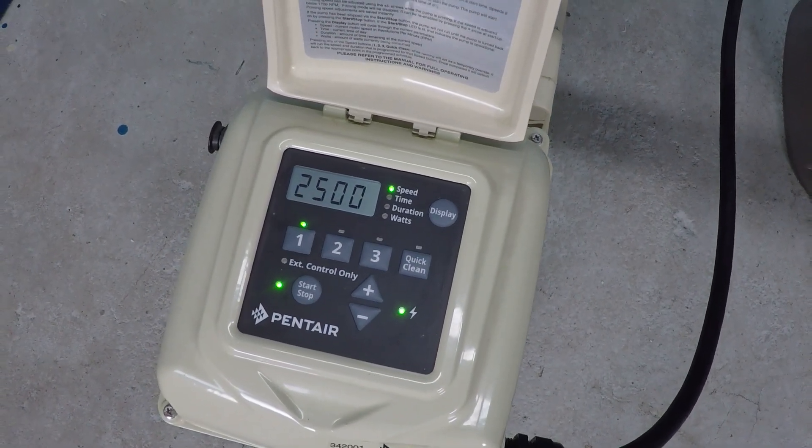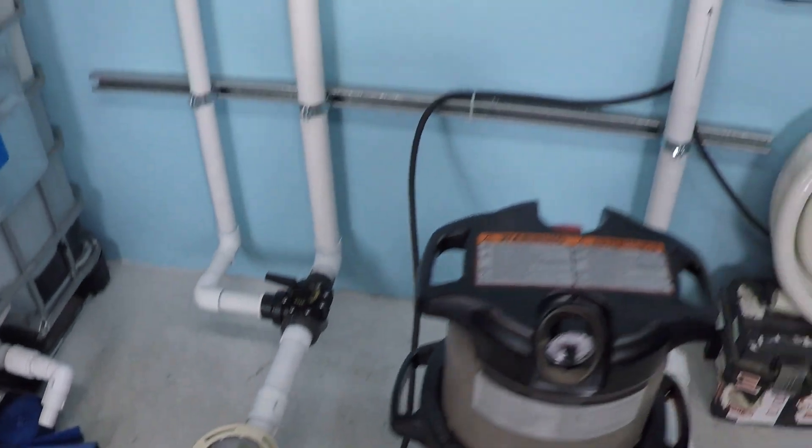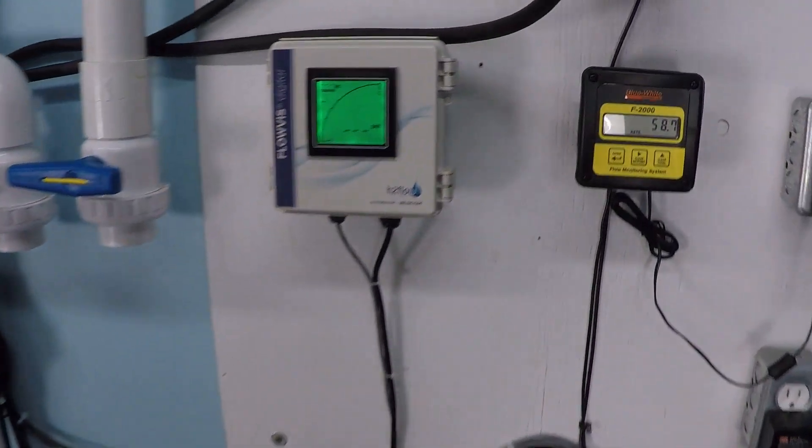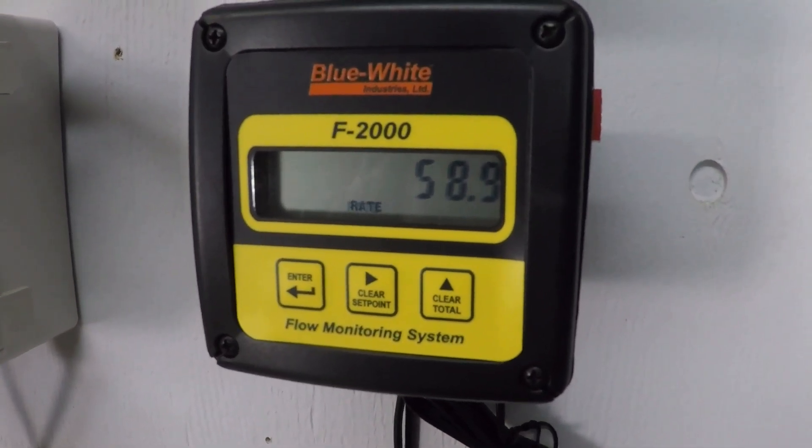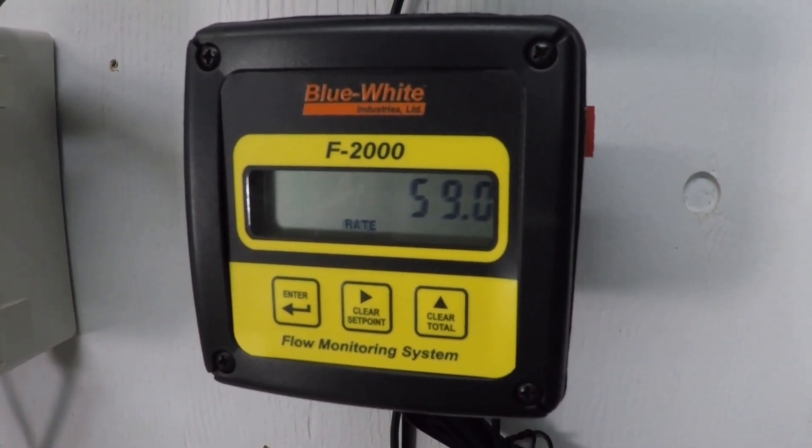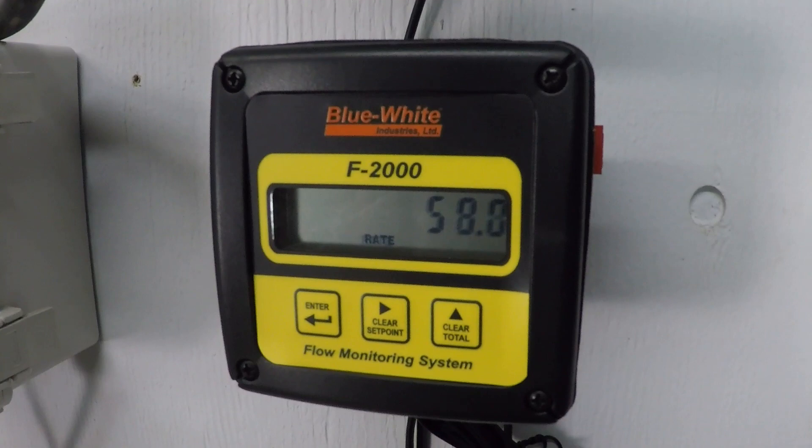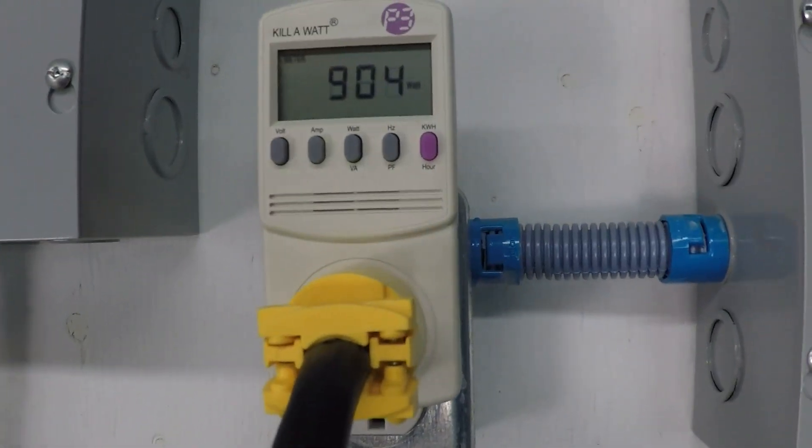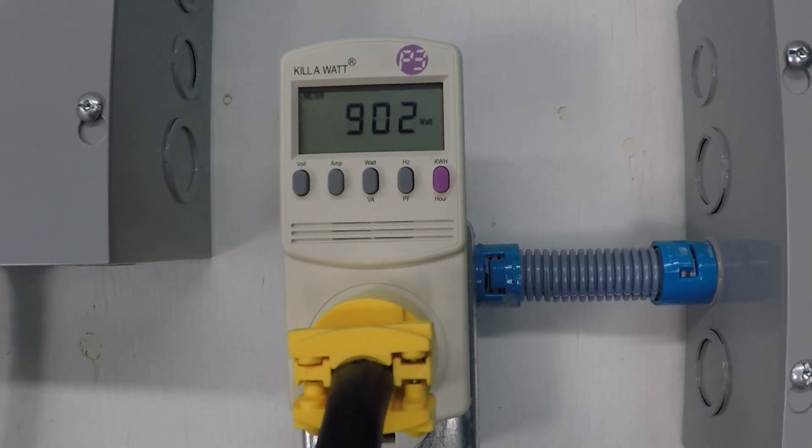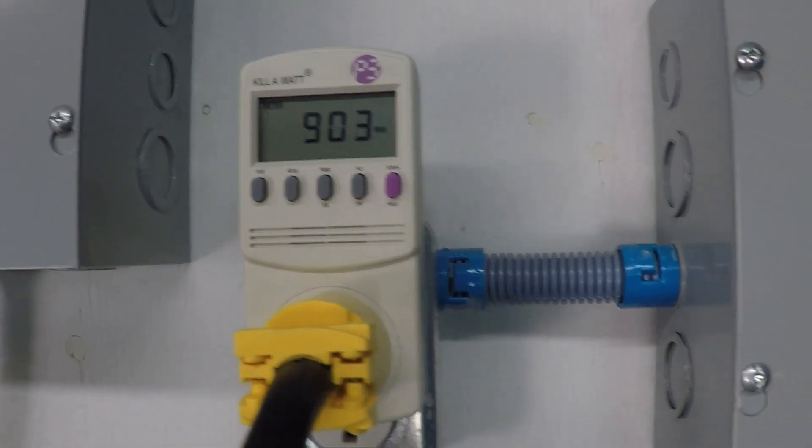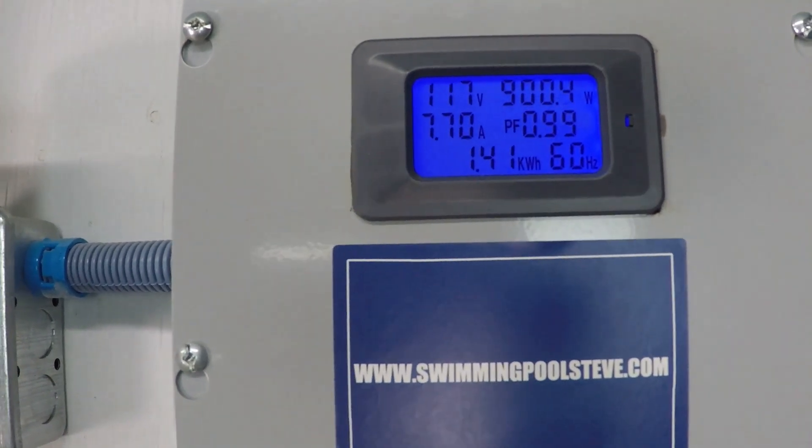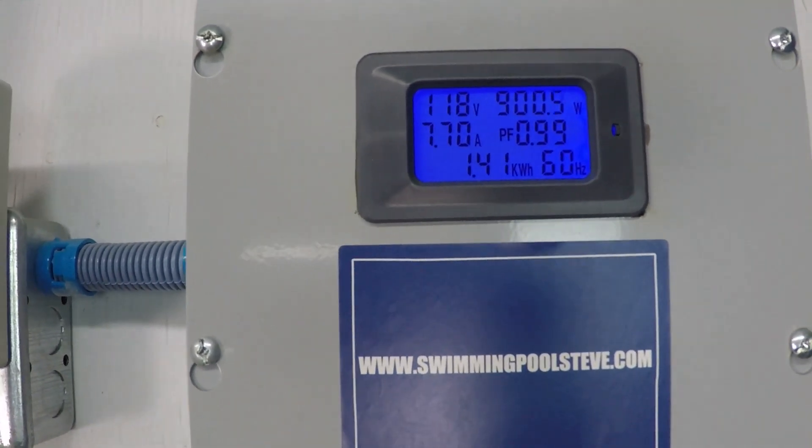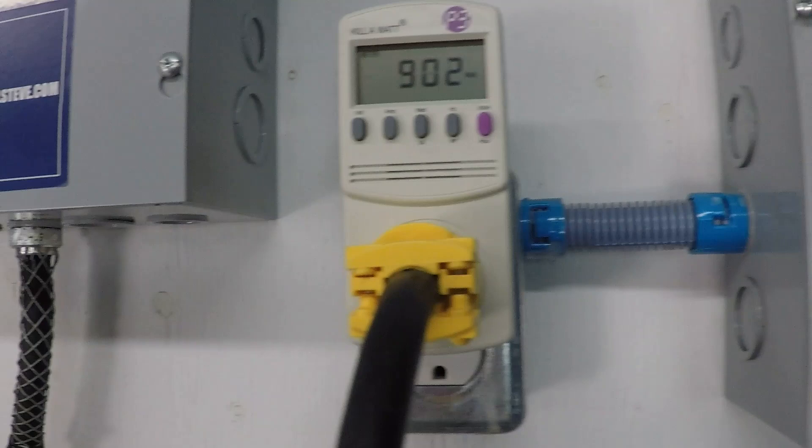2,500 RPM. Just under 60 gallons per minute. 59 gallons per minute. 900 watts. 7.7 amps. 900 watts. 59 gallons per minute.